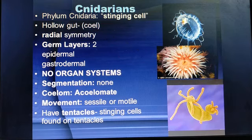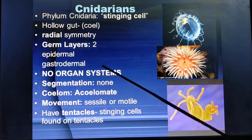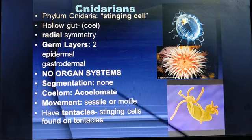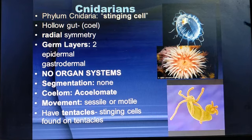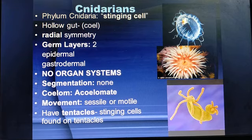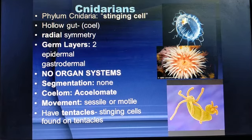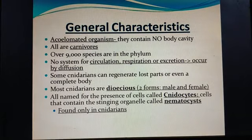There is a coelom — a body cavity. They are diploblastic in nature, meaning made up of two layers: outer ectoderm and inner endoderm. There is no organ system. Segmentation is not present. They are acoelomates — they have an improper body cavity, not a true coelom derived from mesoderm. Movement is either sessile or free swimming, with tentacles containing stinging cells to capture prey. Cnidarians like corals have skeletons made up of calcium carbonate. There are over 9,000 species in this phylum.